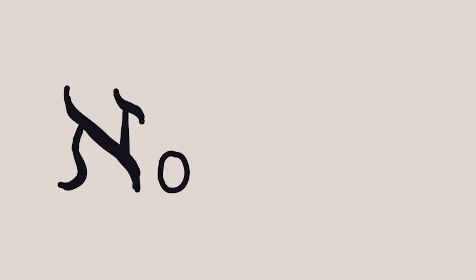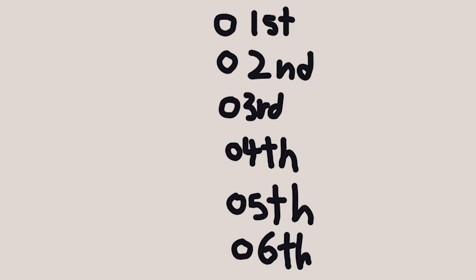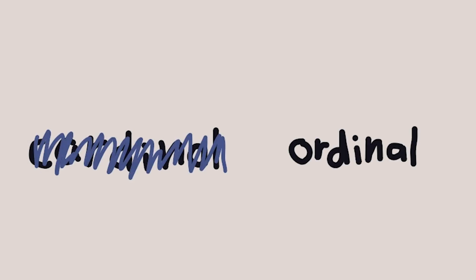Let's say we're some immortal being who stayed floating around in the universe forever — aleph null seconds. What if we waited another second? The amount of actual time we've been floating around for hasn't changed; we've still been floating in space for aleph null seconds. But what if we wanted to label each second in the order that it happened? We need some new infinity of a different kind — not a cardinal, not a number used to count how many things there are, but an ordinal: a number to label the order of things.